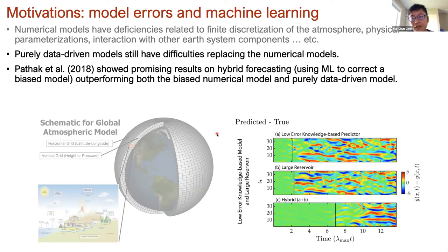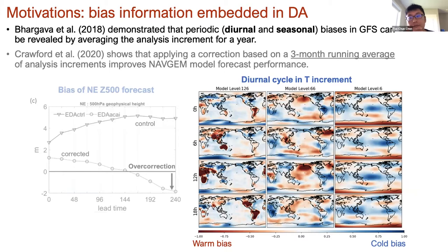They showed that hybrid forecasting — a machine learning corrected model — outperforms the imperfect model or the ML emulation alone. The unique aspect of this study is that working with a state-of-the-art operational weather model, we don't really have a truth or high-resolution simulations to learn from. The next best thing we have is the analysis field from data assimilation, which optimally combines observations with the short-term six-hour forecast to get the best estimation of atmospheric states. This six-hourly correction is called analysis increments.